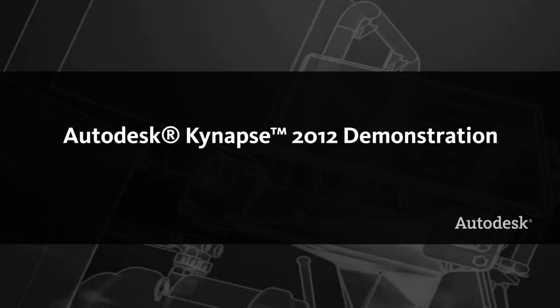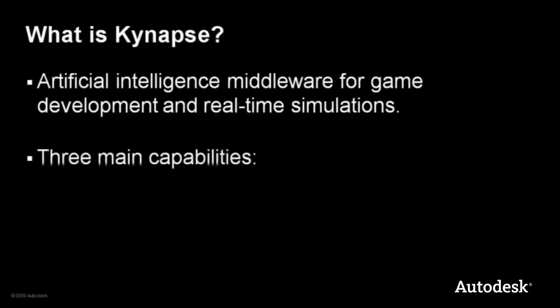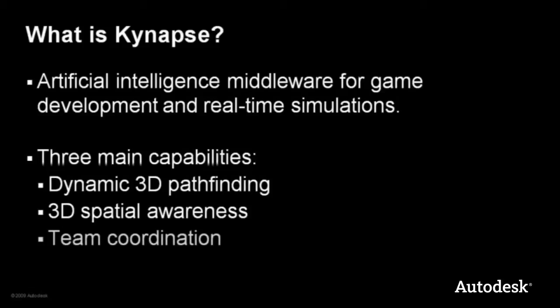Welcome to this presentation on Autodesk Kynapse. Kynapse is an artificial intelligence middleware solution for game development and real-time simulations. Kynapse gives in-game characters or entities three key capabilities: dynamic 3D pathfinding, 3D spatial awareness, and team coordination.